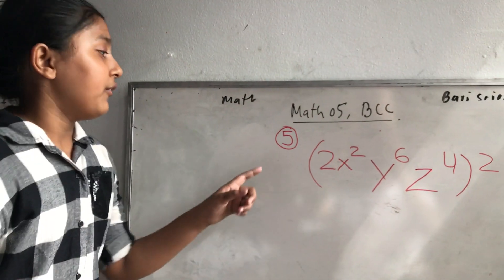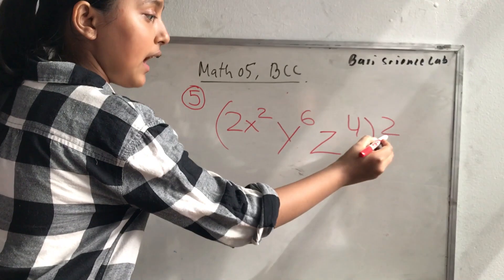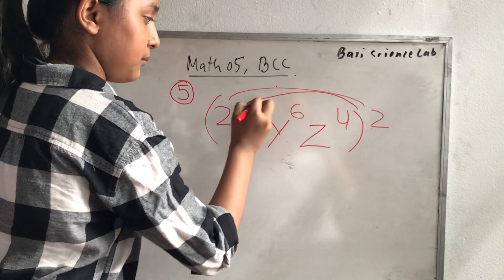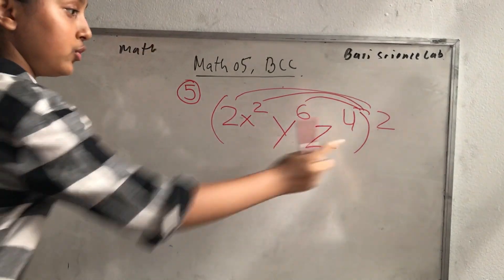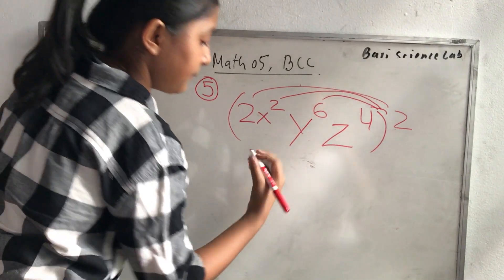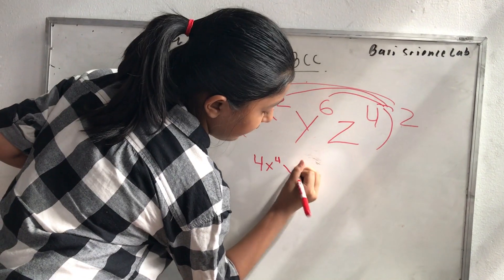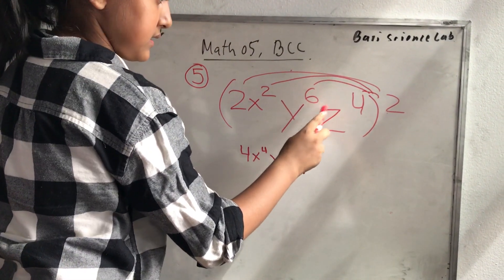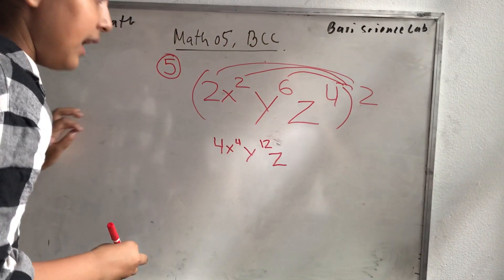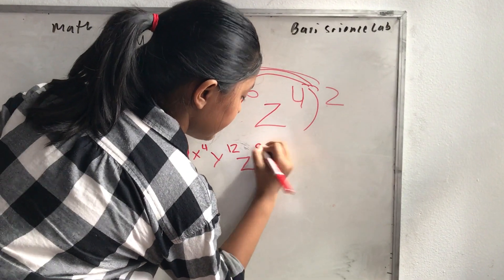Hi, my name is Ajanta Barty. Right now we're going to do problem number 5. First you have to multiply this 2 by every number. 2 times 2 is 4, so your first number is 4. Then 2 times x squared is 4x. Then you have to bring down the y. Then you do 2 times 6 is 12, so you put 12z. Then you have to do 2 times 4, which is 8. So that's the answer.